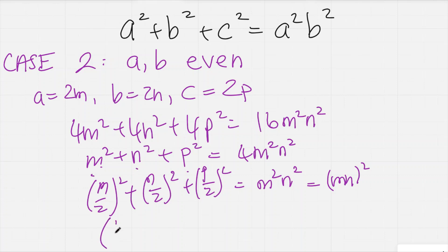So m/2 squared divided by 4 is (m/4)² + (n/4)² + (p/4)² and that equals m²n²/4.